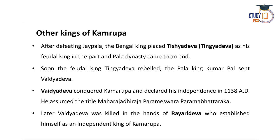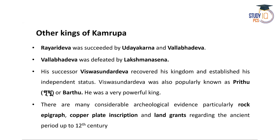The feudal king Tingadeva started a rebellion. Bengal Pal king Kumarpala then sent Vaidyadeva, who conquered Kamrup and declared independence in 1138 AD, assuming the title Maharaja Dhiraaja Parameshvara Parambhattaraka. Later, Vaidyadeva was killed by Rajariadeva, who established himself as an independent king of Kamrup. After the Pal dynasty, several rulers — first Tishadeva, then Vaidyadeva, and finally Rajariadeva — established independent kingdoms in Kamrup.